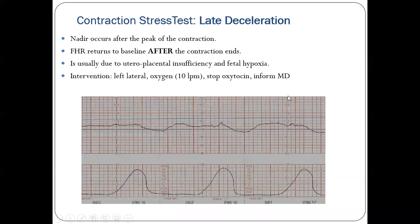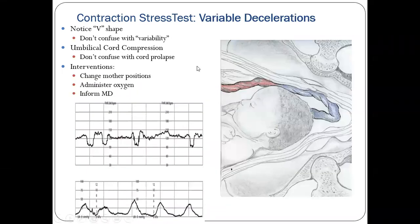The intervention for late deceleration: first, change the position to left lateral; give them oxygen and IV fluid; also discontinue oxytocin and be prepared for C-section; inform the healthcare provider. If a patient has early deceleration — head compression — nothing you have to do except observation. If a patient has variable deceleration, such as cord compression, also use lateral position, give oxygen, and prepare for C-section.